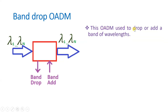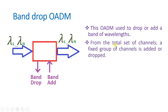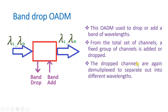Band drop OADM is used to drop and add bands of wavelengths — a combination of bands where a single band may contain multiple channels or wavelengths. From the total set of channels, a fixed group of channels is added or dropped. When you drop multiple channels in terms of a band, further demultiplexing is required after the band drop to extract individual channels, which can then be given to the respective receivers.